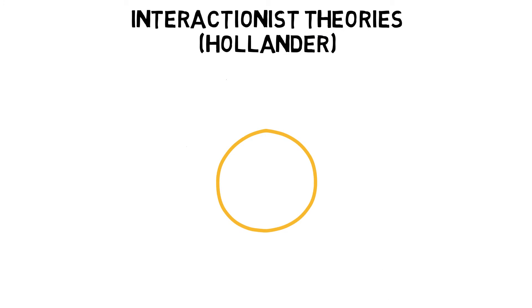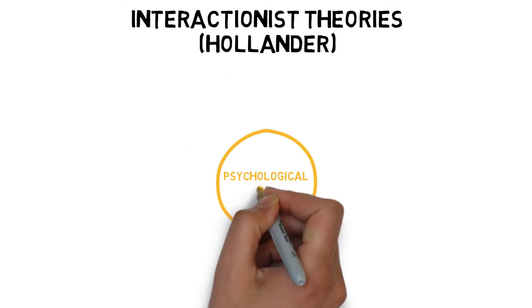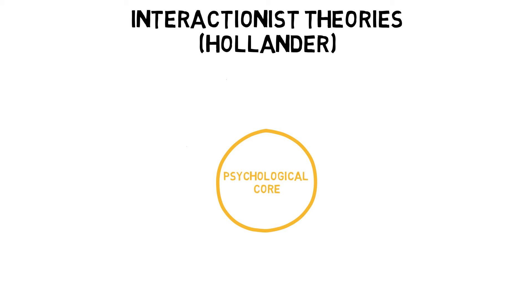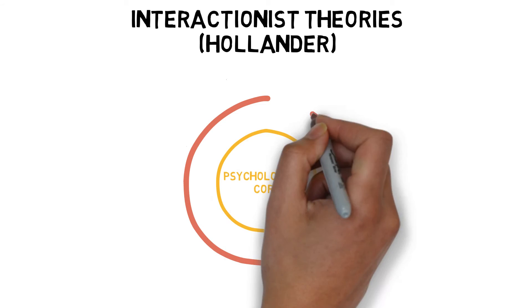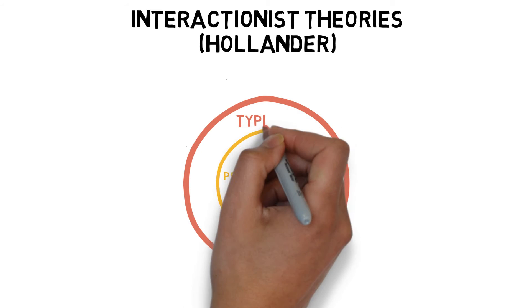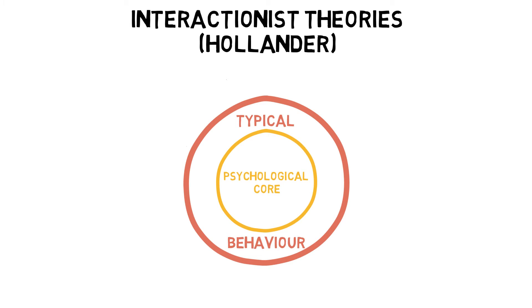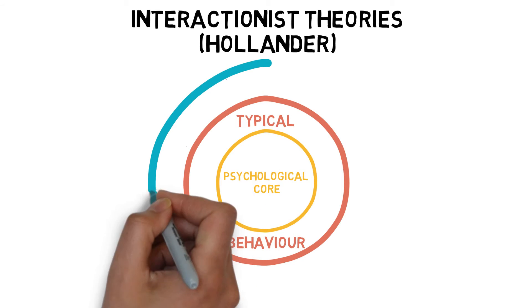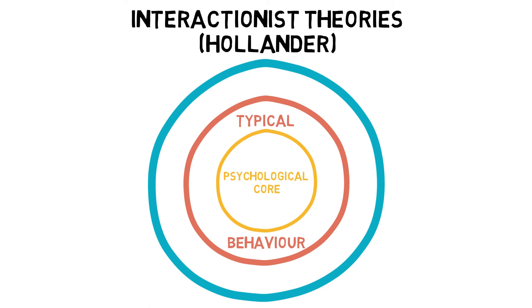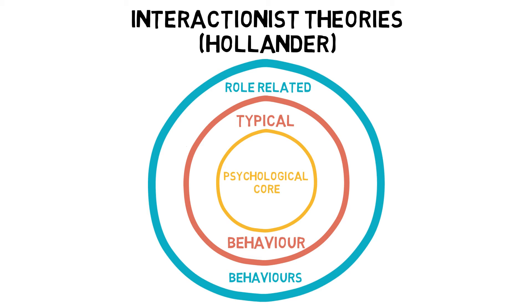Hollander outlined a series of rings to determine personality, with the inner ring being the most difficult to change. The psychological core is the real you — your fundamental views and beliefs that are unlikely to change, such as what you deem to be fair play. Typical behaviour is how likely an individual will respond to a situation, generally representative of the inner core, such as stopping boxing at the bell. Role-related behaviours are changeable behaviours depending on the situation, such as hitting an opponent after the bell if they did it to you in the previous round. This is the most changeable aspect of personality.